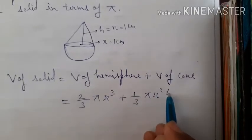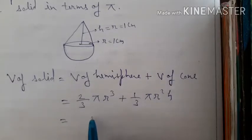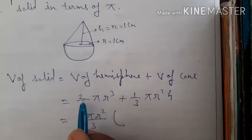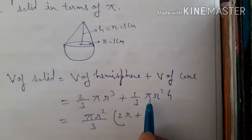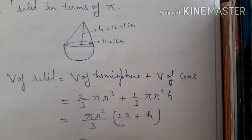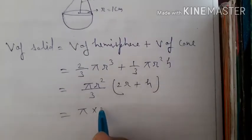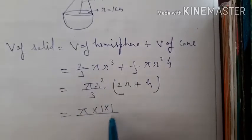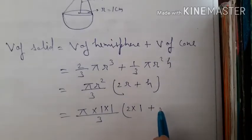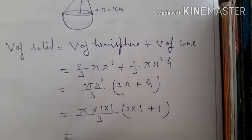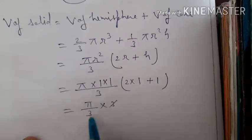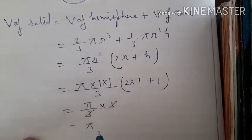Take πr²/3 common, which gives (πr²/3)(2r + h). Now putting in the values: r = 1 cm, so r² = 1×1. That gives (π/3)(2×1 + 1) = (π/3)(3). The 3s cancel out, leaving π.